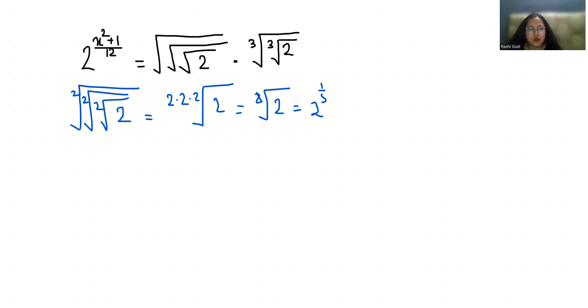Similarly, cube root cube root of 2 I can write as 3 times 3, cube root 2. So this becomes 9th root 2, so 2 power 1 by 9. Now I'm going to replace both with this value from the question. So my question is 2 power x square plus 1 by 12 equals 2 power 1 by 8 times 2 power 1 by 9.